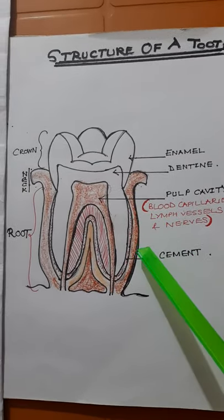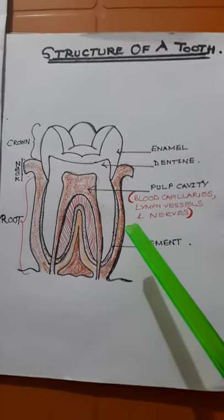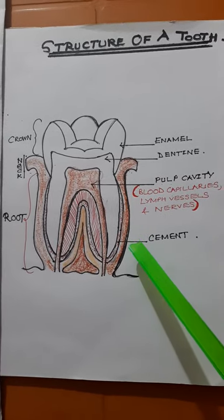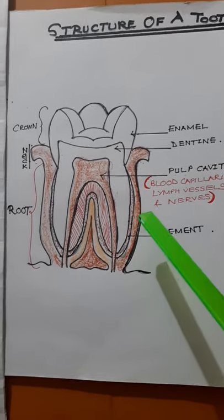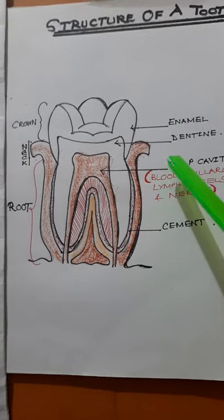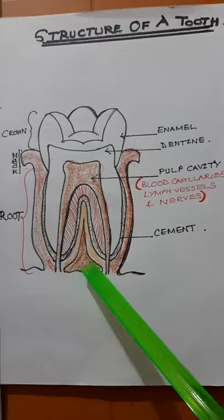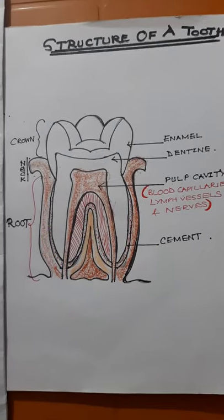So this is the general structure of the tooth. Though there are many types of teeth, in general this is the structure. Thank you.